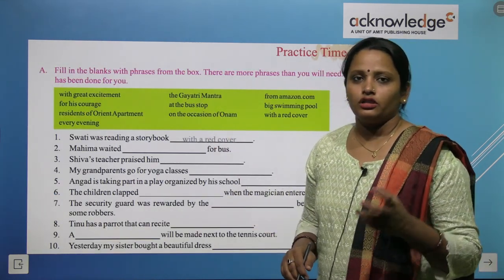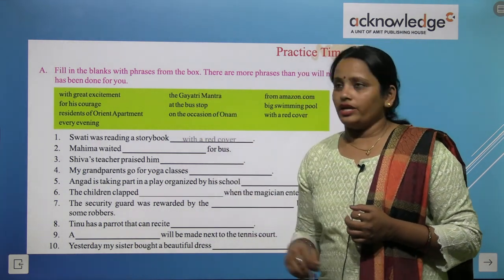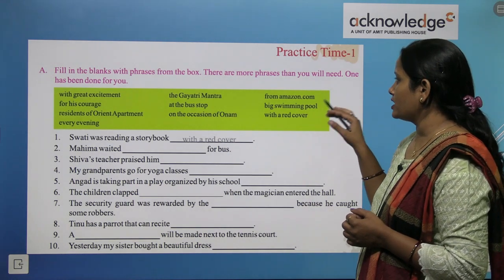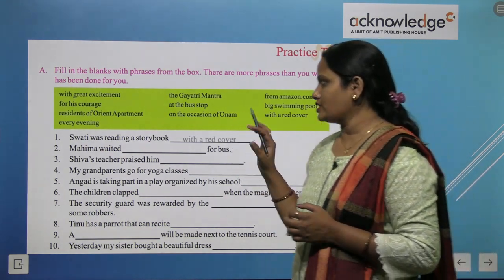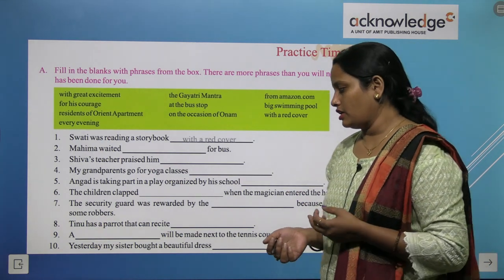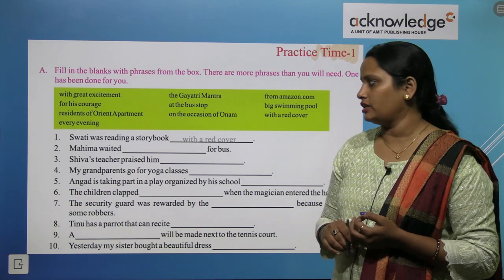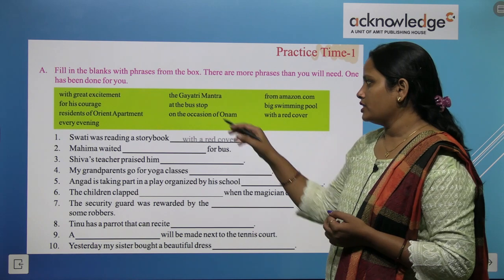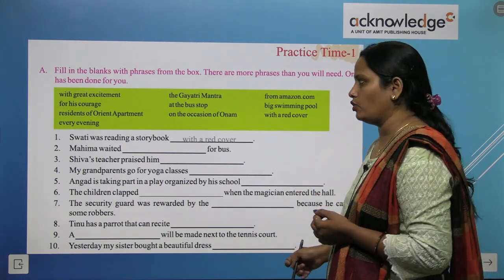Now, after learning about phrases, let's do the book exercise. Fill in the blanks with a phrase from the box — there are more phrases than you will need, and one has been done for you. For example: 'Aati was reading a story book with a red cover' and 'Mahima waited for the bus at the bus stop.' The rest is your homework.